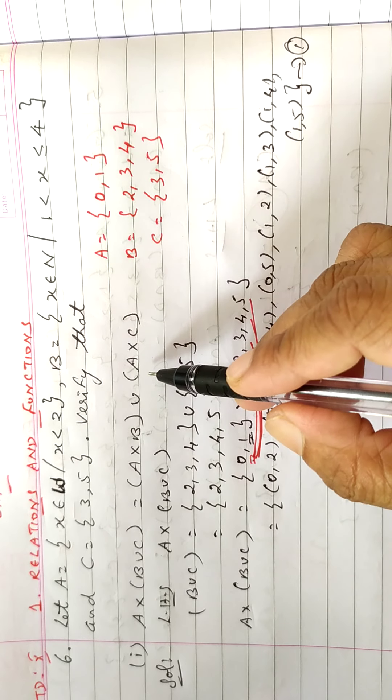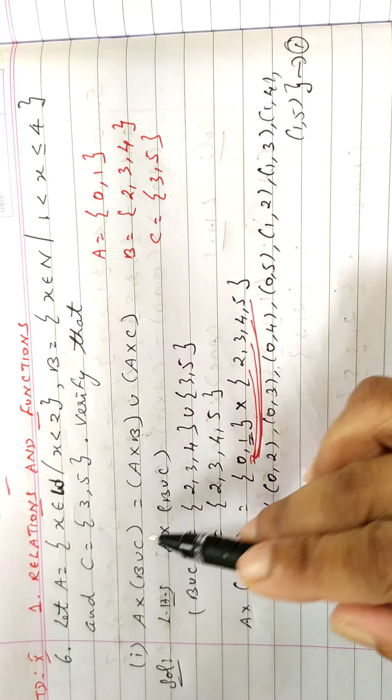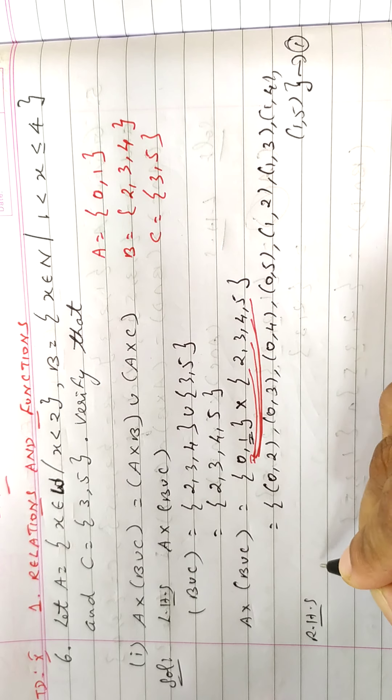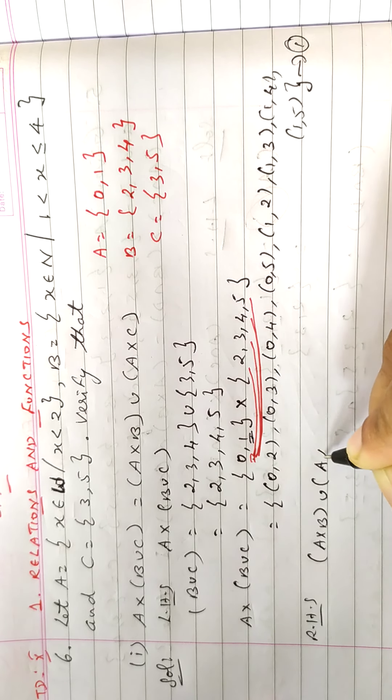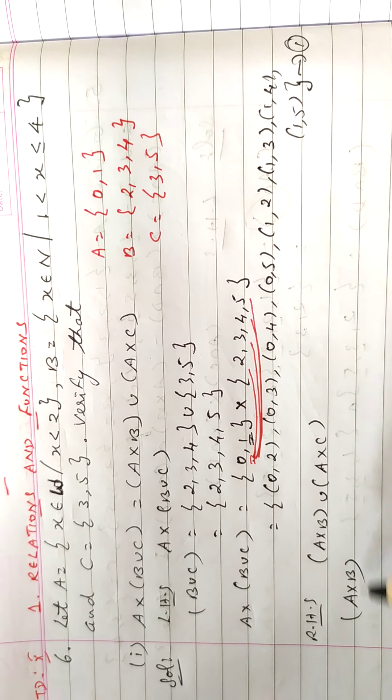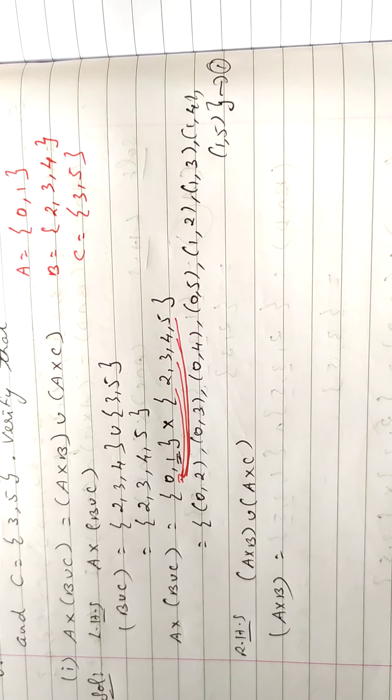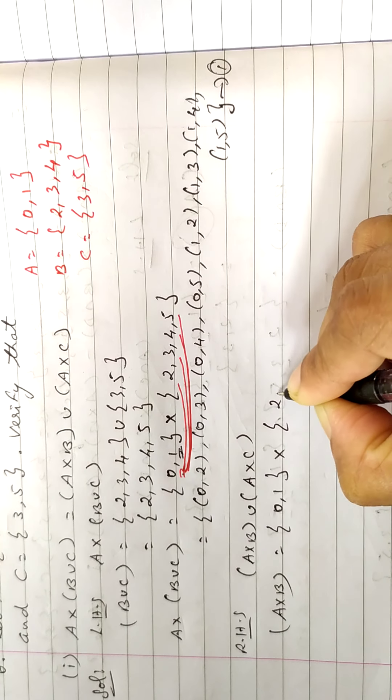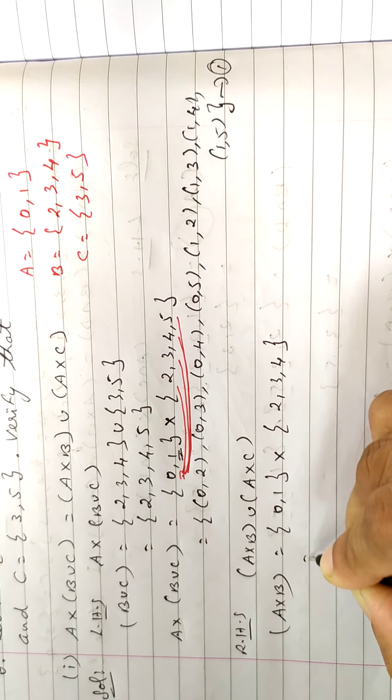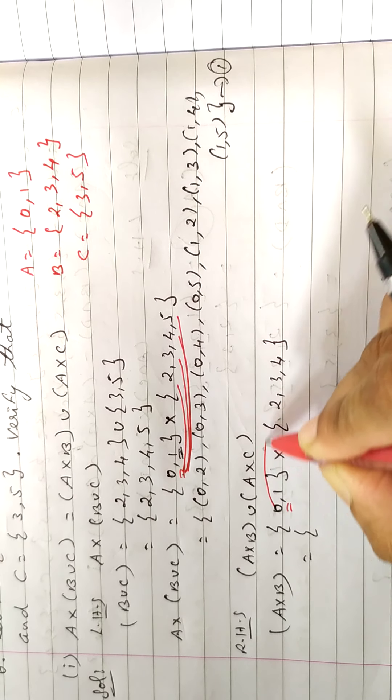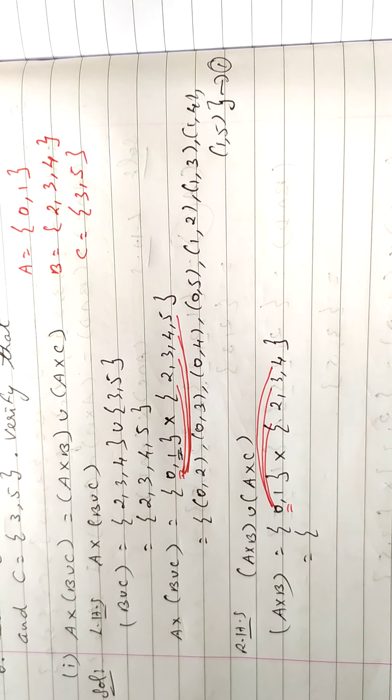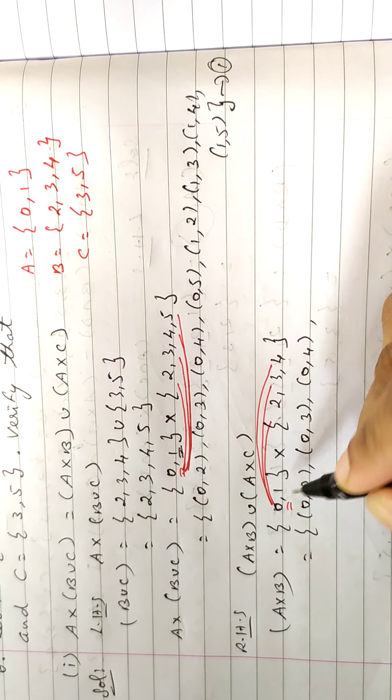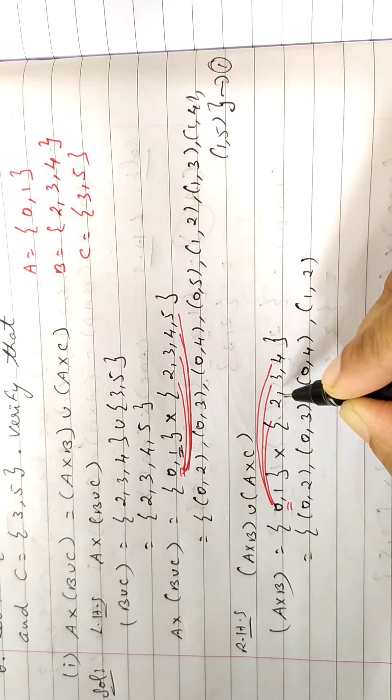Now you find the right hand side answer. A cross B union A cross C. First we find A cross B value. So what is the cross product for A and B? Set A is 0,1 cross product with B is 2,3,4. If you take first element paired with all elements, so you will get 0,2, 0,3, 0,4. Then you take the second element, 1,2, 1,3, 1,4.